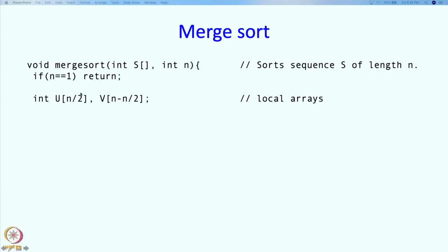If n is bigger than 1, then we said that we are going to break it up into 2 small sequences. Let us call those 2 sequences u and v. We are going to break it nearly into halves. This is going to be n by 2 and this is going to be n minus n by 2.